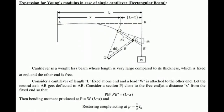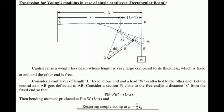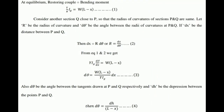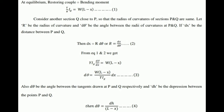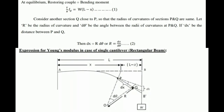The bending moment produced at point P equals W(L − x). The restoring couple acting at P is Y/R × Ig, which was derived in the previous video on the bending moment equation. At equilibrium, the restoring couple equals the bending moment, giving us Equation 1: (Y/R) × Ig = W(L − x).